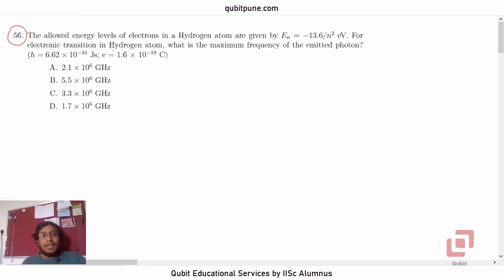The allowed energy levels of electrons in hydrogen atom are given by En equal to negative 13.6 upon n squared electron volt. For electronic transition in hydrogen atom, what is the maximum frequency of the emitted photon? We are given the values of Planck's constant and the charge on electron.